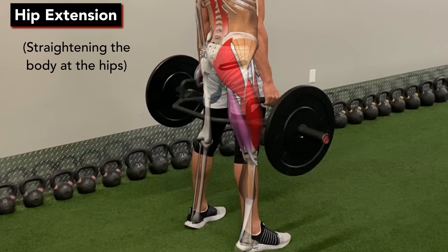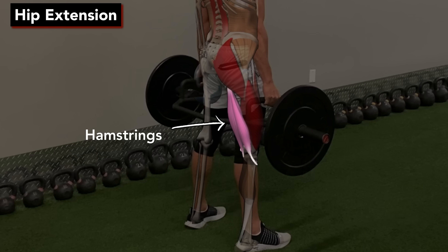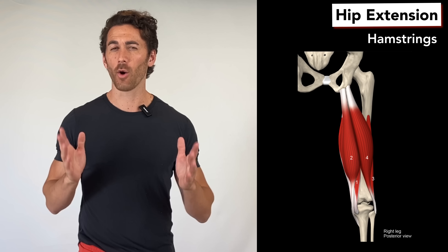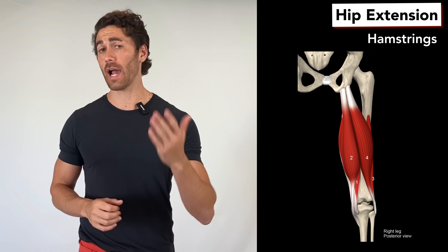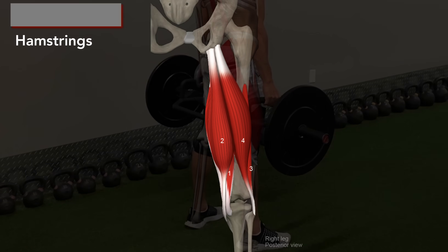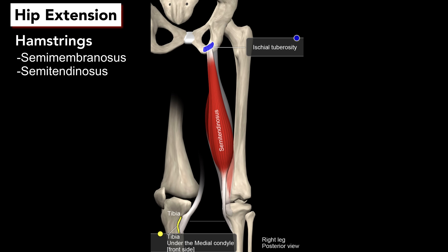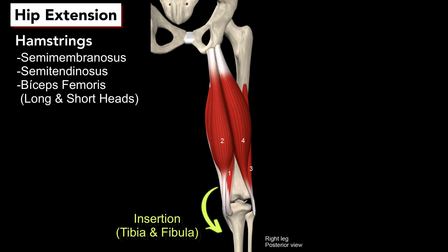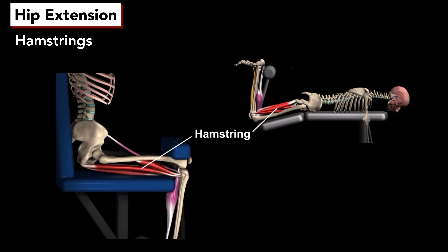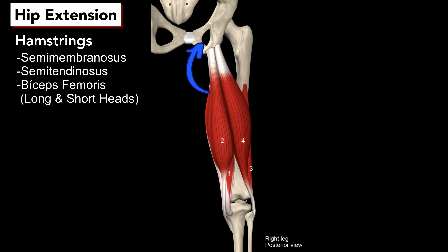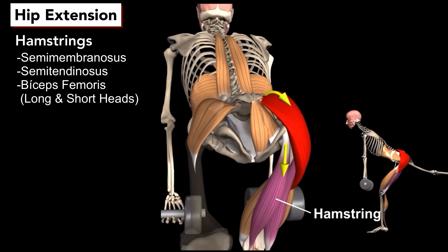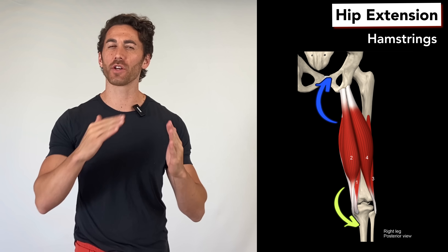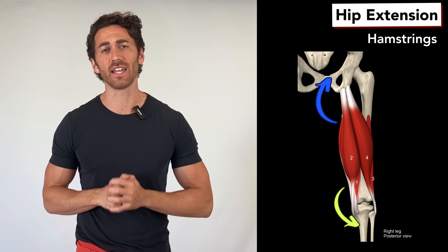Another group of muscles that perform hip extension are the hamstrings, or the muscles that make up the underside of the thigh. Whether the hamstrings are primary or secondary targets in the deadlift depends on how you do it. What we call the hamstrings are really three different muscles: the semimembranosis, the semitendinosis, and the biceps femoris. They all cross the back of the knee, so when they contract, they flex or bend the knee. However, they also cross the back of the hip joint, with origination points on the back of the pelvis, so they also pull the back of the leg and the back of the pelvis closer together, straightening the hips. It's this fact that the hamstrings cross both joints that makes it an interesting case with the deadlift.